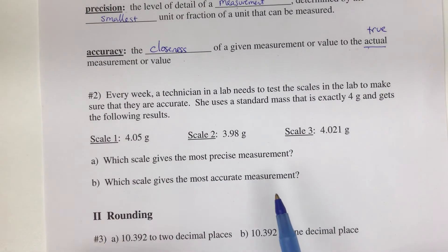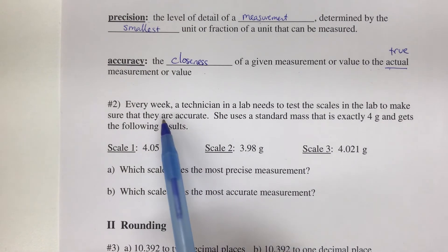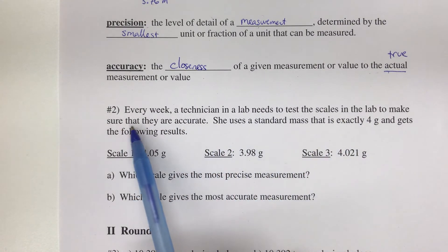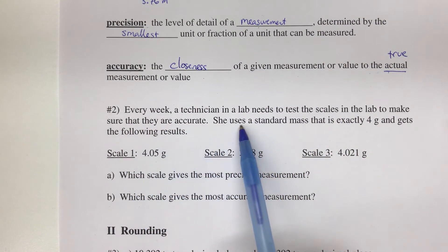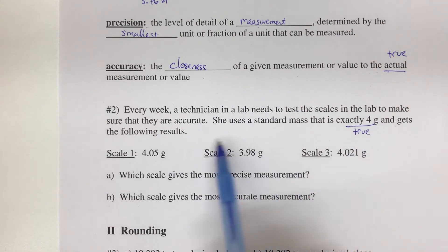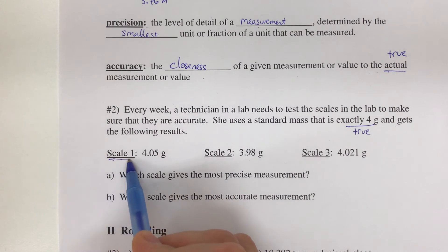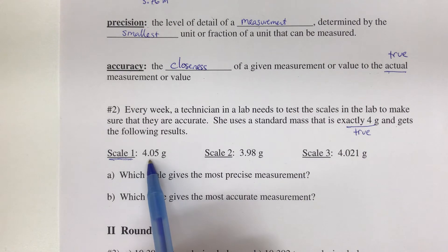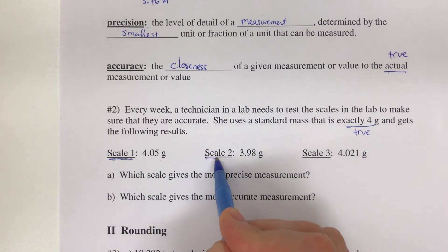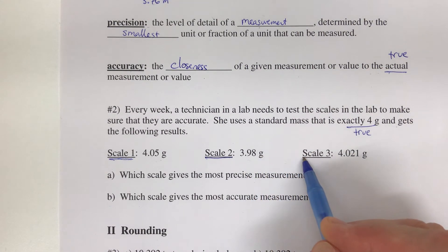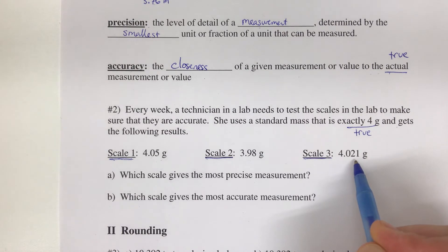In number two, every week a technician in a lab needs to test the scales to make sure they are accurate. She uses a standard mass that is exactly 4 grams—this is the true weight—and gets the following results. Scale 1 measures 4.05 grams, Scale 2 measures 3.98 grams for the same mass and object, and Scale 3 measures 4.021 grams.